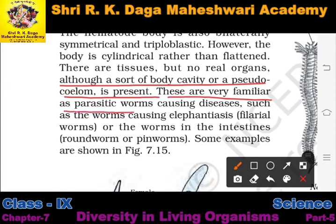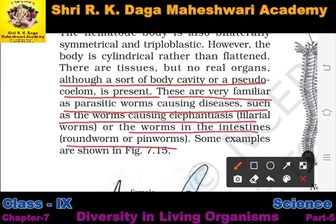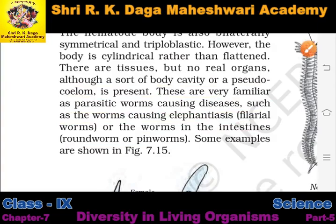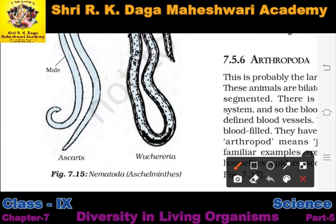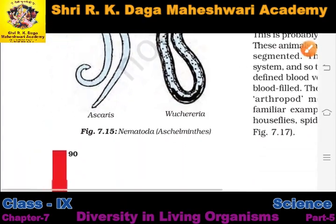Nematodes are very familiar as parasitic worms causing diseases, such as worms causing elephantiasis — a very fatal disease caused by filarial worms — or roundworms and pinworms found in the intestines. Some examples are Ascaris and Wuchereria, which are shown in the figure.